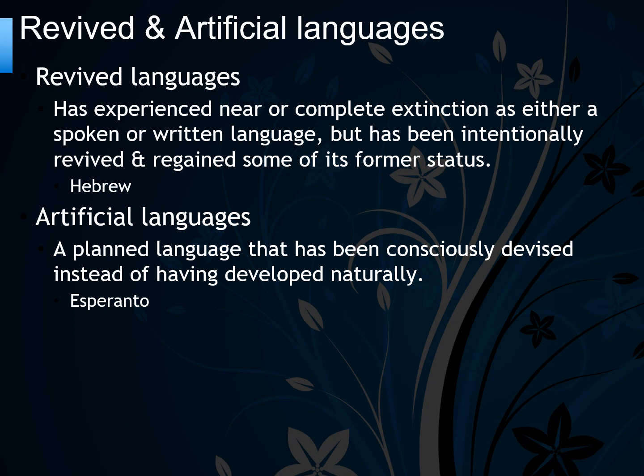An artificial language is a planned language consciously devised instead of developed naturally. The only example is Esperanto, which was created as an attempt to make a global language that everybody could learn.